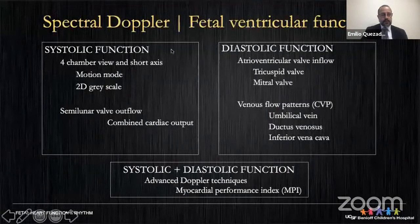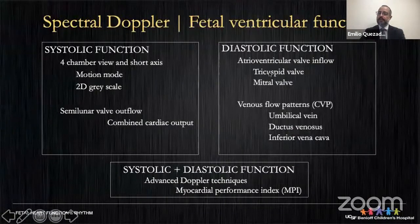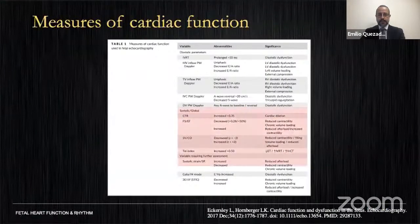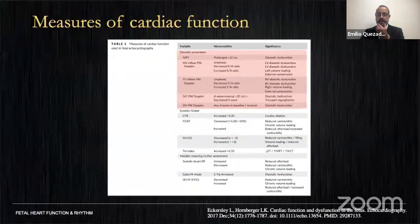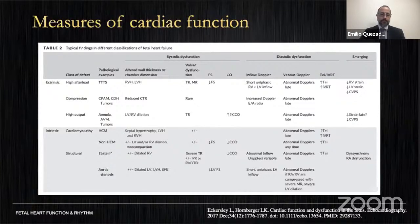Apart from the determination of fractional shortening and ejection fraction with M-mode and 2D grayscale, most quantitative techniques for ventricular function in the fetus use pulsed and continuous Doppler. I'll talk briefly about the myocardial performance index as an assessment of both systolic and diastolic function, and discuss specific techniques of systolic, diastolic, and combined function.